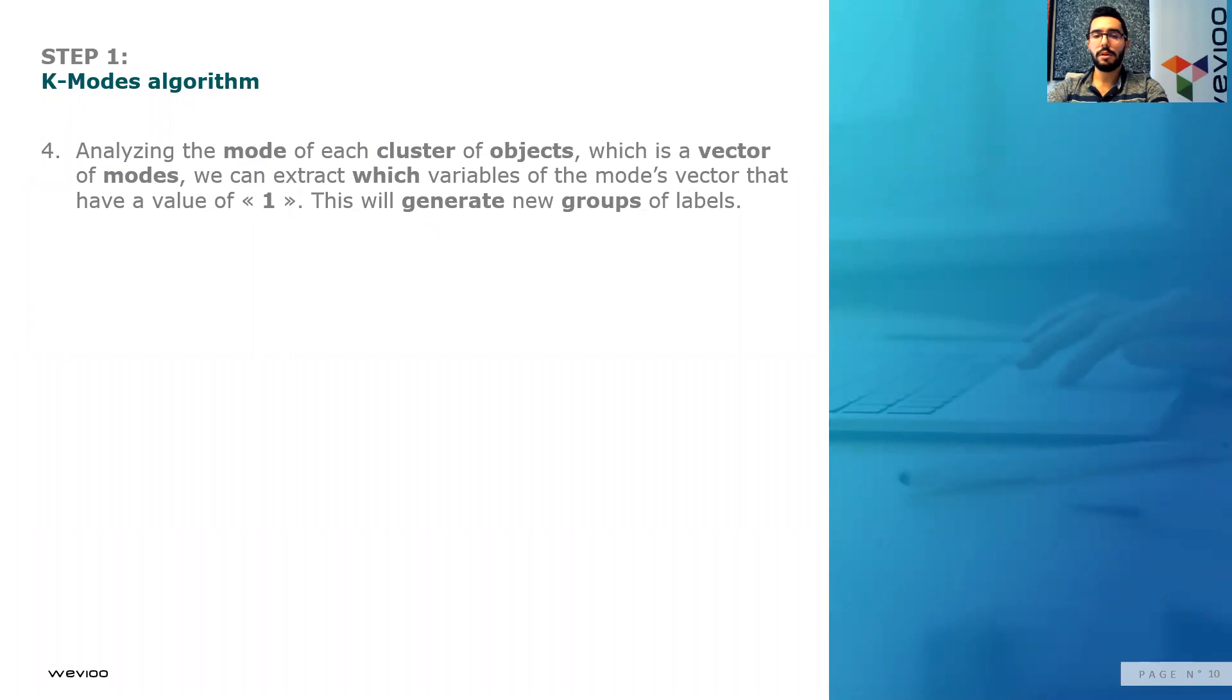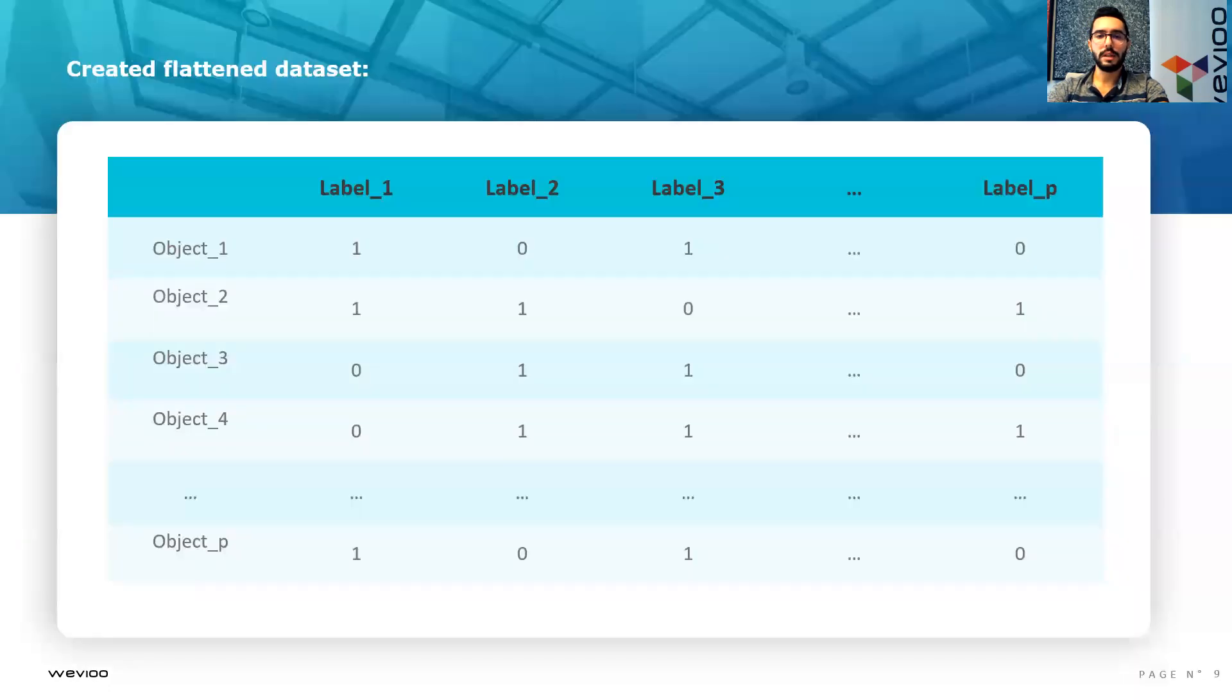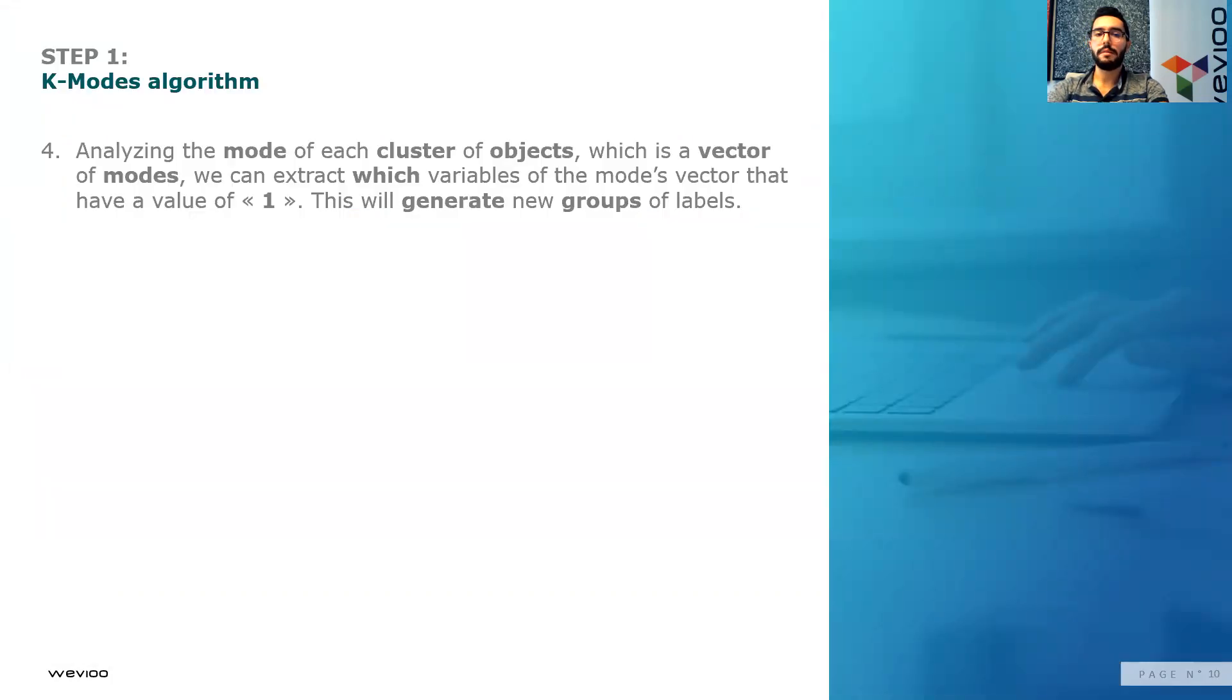When we analyze the mode of each created cluster of objects, which is the vector of modes, we extract which variables of the modes vector have the value of one. In our flattened dataset, the variables can take either zero or one as values. So the mode of each variable can be either zero or one. We extract the variables that have the value of one in the modes vector. Then we will be able to generate new groups of labels. This is the main idea in step one of our method.